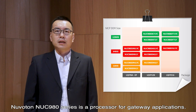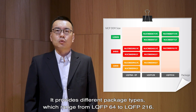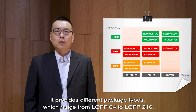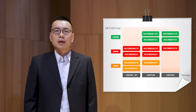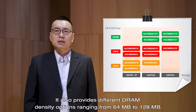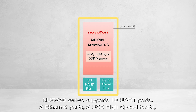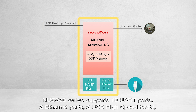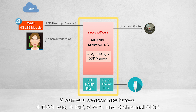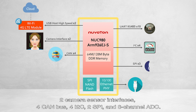Nuvoton NUC980 series is a processor for Gateway applications. It provides different package types, ranging from LQFP64 to LQFP216. It also provides different DRAM density options, ranging from 64MB to 128MB. NUC980 series supports 10 UART, 2 Ethernet, 2 USB high-speed hosts, 2 camera sensor interfaces, 4 CAN bus, 4 I2C, 2 SPI, and 8-channel ADCs.